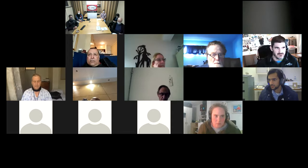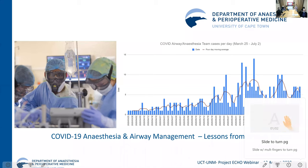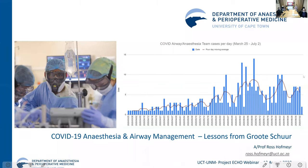We'll move on to our main talk for this afternoon. I'd like to introduce Ross Hoffmeyer — Ross is an associate professor in the Department of Anesthesia and Perioperative Medicine at UCT and Groote Schuur Hospital. His particular interests are in airway medicine, and he also has an interest in wilderness medicine. Together with colleagues at Groote Schuur, early in the COVID epidemic he became aware of the huge need for an intubation service to support COVID services. Ross is going to discuss the experiences, challenges, and issues in providing that service.